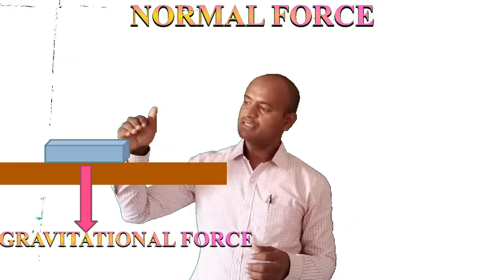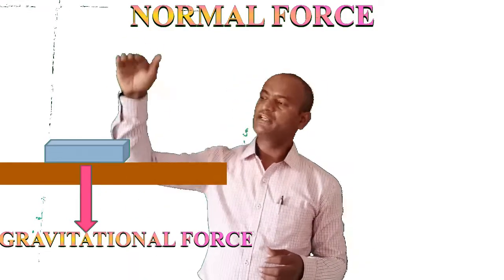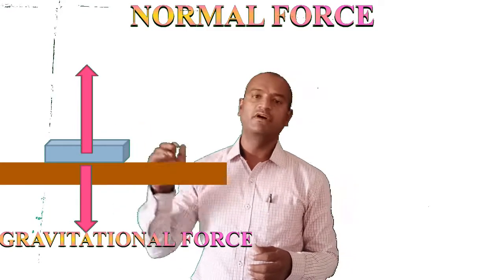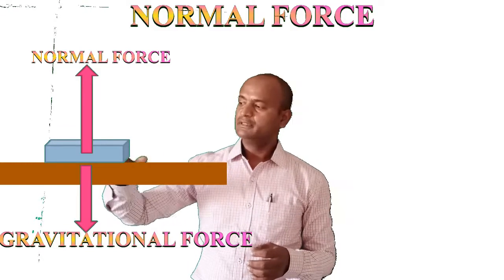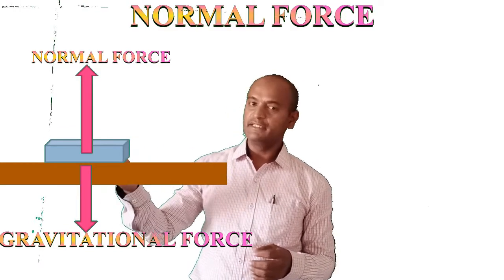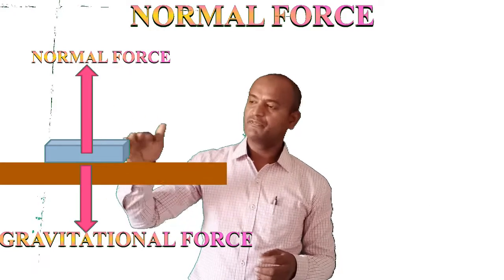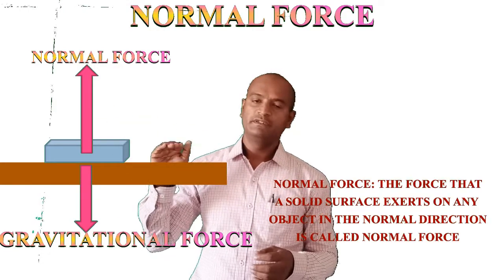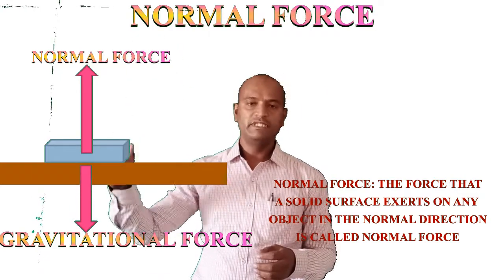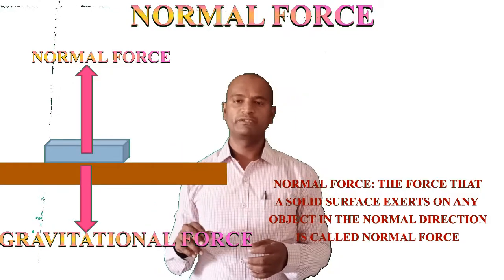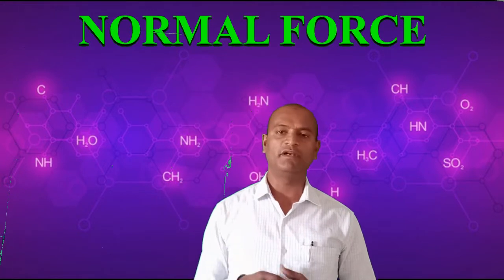There exists a force which supports the book against gravity by pushing it in the upward direction — this is called normal force. The table surface applies a force on the surface of the book that is perpendicular to the surface of the table. This is normal force. Let's look at one more example of normal force.